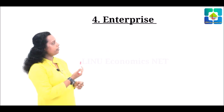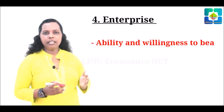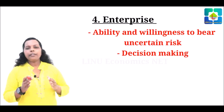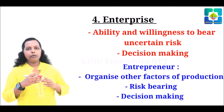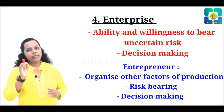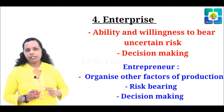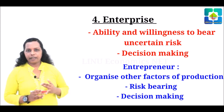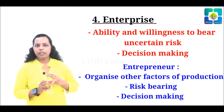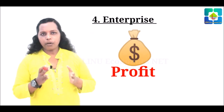The fourth factor is enterprise. Enterprise is the ability and willingness to bear uncertain risks in the production process. Entrepreneurs are the people who organize all other factors of production. They are the risk takers, and their two main functions are decision making and risk bearing. An entrepreneur decides what to produce, how to produce, and for whom to produce. The reward of the entrepreneur is profit.